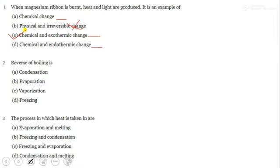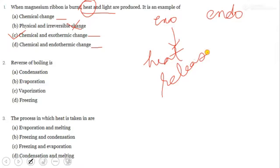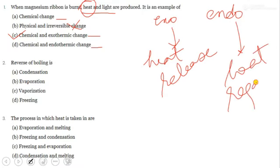When it burns, it releases heat and light. If a reaction gives out heat, it is an exothermic process. Two things happen — exothermic means heat is released, and endothermic means heat is required or absorbed.